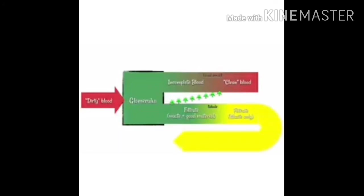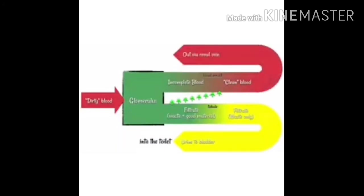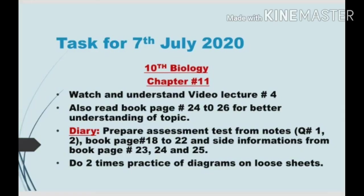This waste material leaves the body — it goes to the bladder and is now known as urine, from where it can exit the body. The useful blood leaves the kidneys via the renal vein and goes back into circulation.